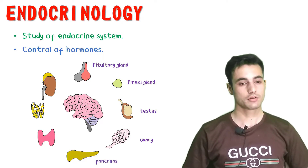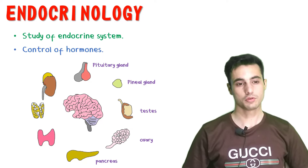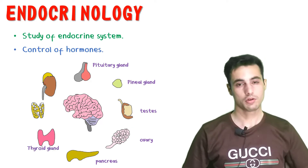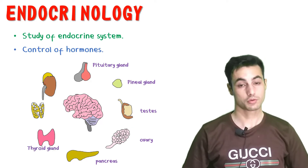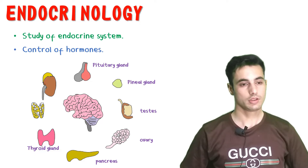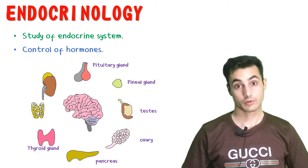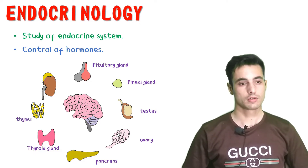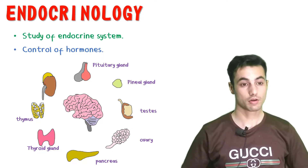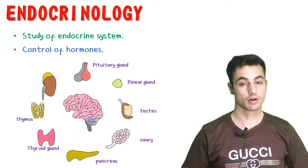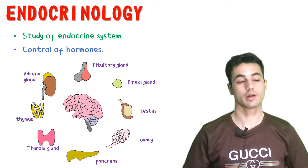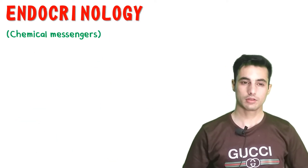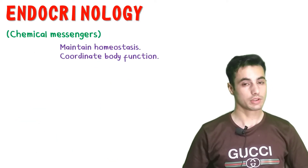The pancreas secretes insulin and glucagon. The thyroid gland, located in your neck, secretes T3 and T4, which regulate metabolism throughout the body. We have the thymus in the thorax region, and on top of the kidney we have the adrenal glands.